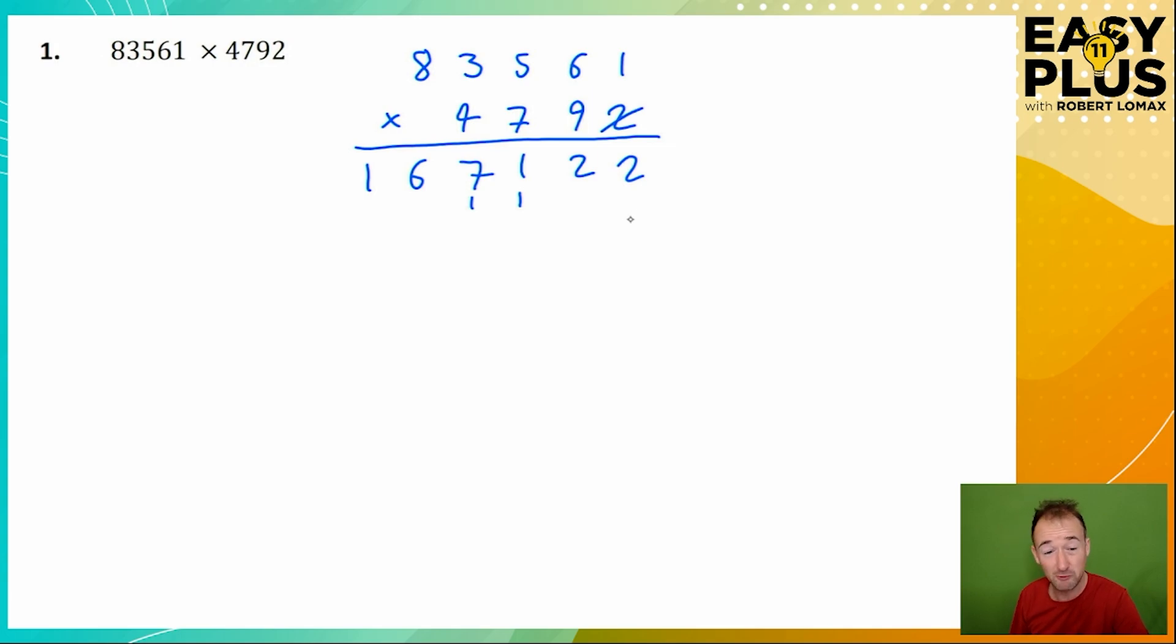Starting the next row, we need to remember to begin with a 0. If you don't do this, your answer will be wildly wrong. Now we look at the 9. 9 times 1 is 9. 9 times 6 is 54.